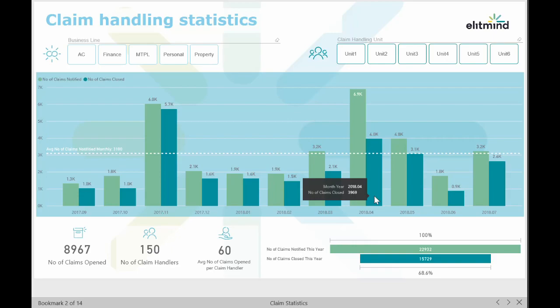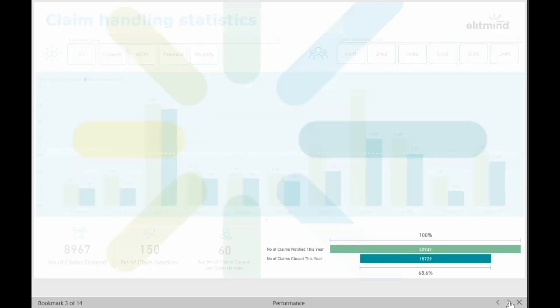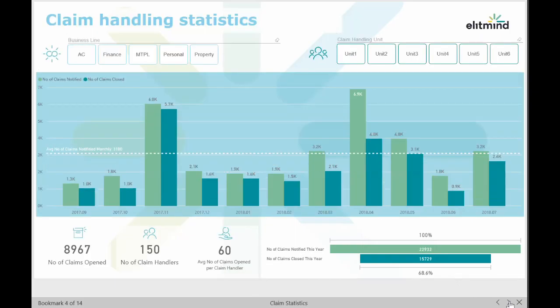To quickly check our performance in the current year we can see the percentage of claims closed to notified. We can also go deeper to check what the workload per claim handler is and drill down, for example, in May 2018.